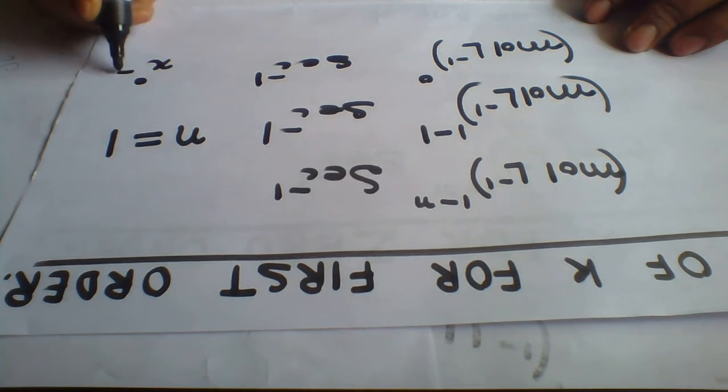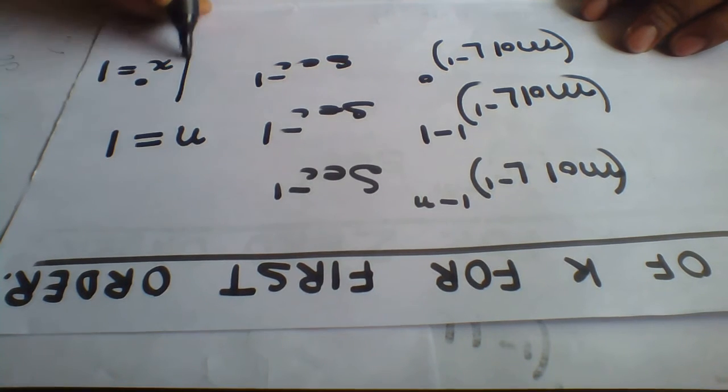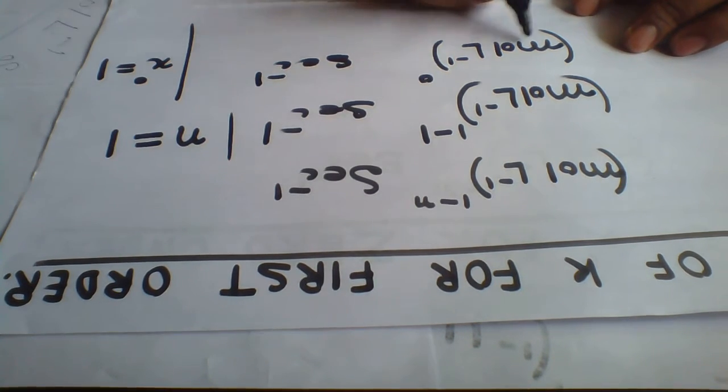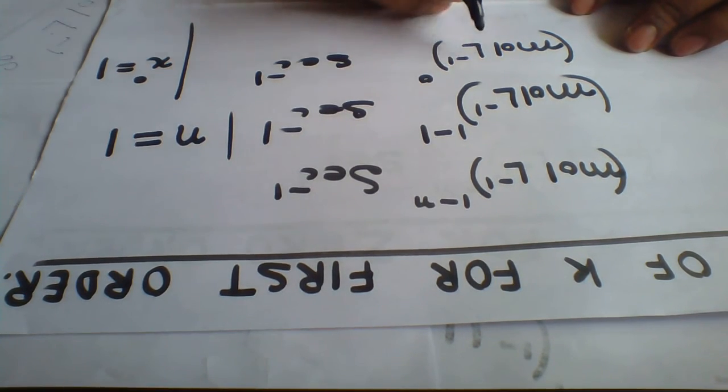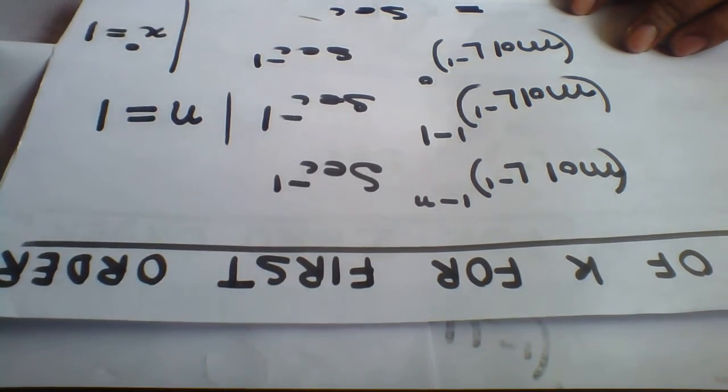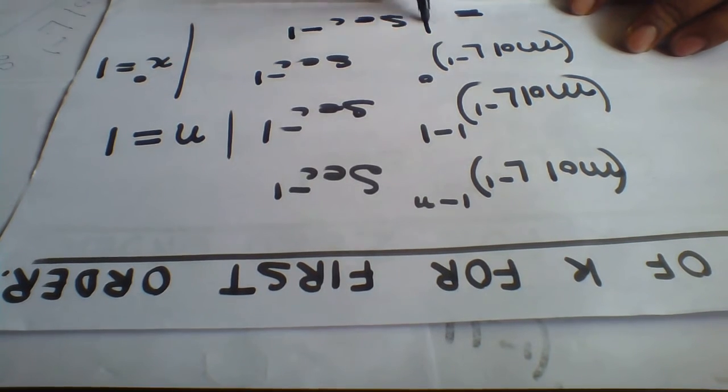Second inverse is the unit for rate constant in case of first order reaction. Let's calculate the unit of rate constant for zero order reaction. To remember: moles per liter 1 minus n, second inverse. For zero order reaction, n is equal to 0.